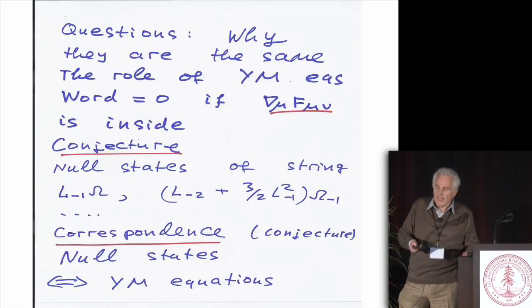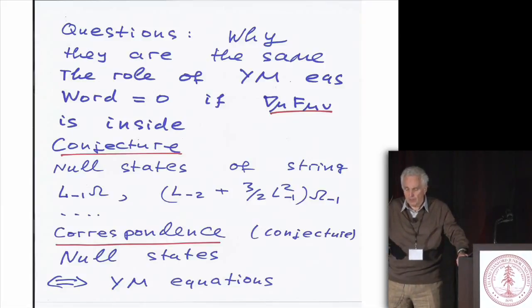And the question is why there is this coincidence between vertex operators and single-trace gauge operators. And a possible answer, again, that's the open problem.